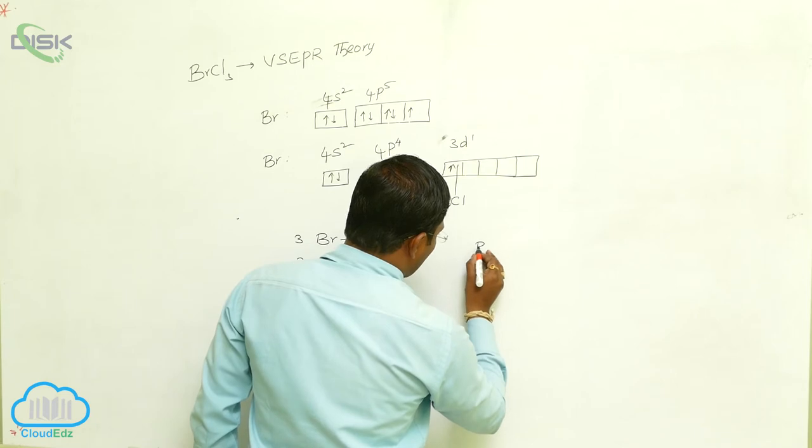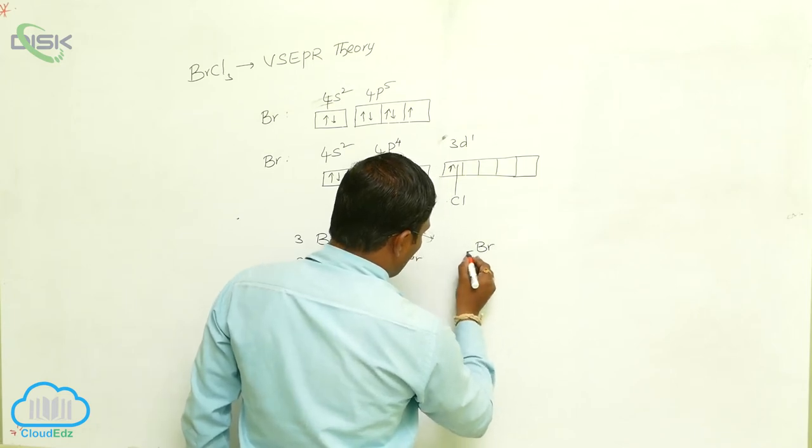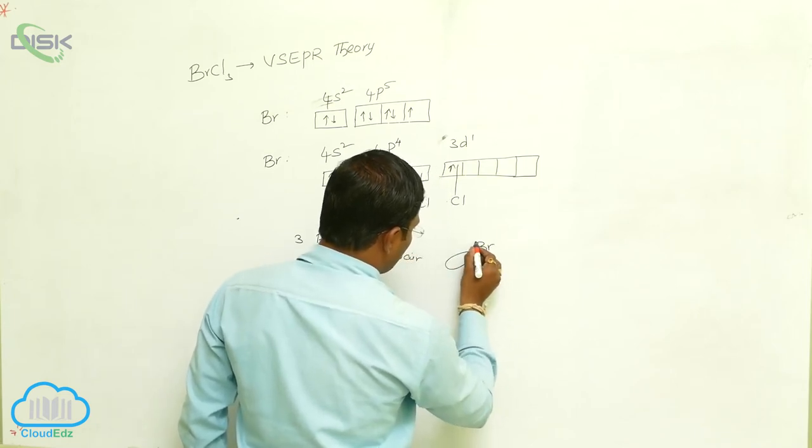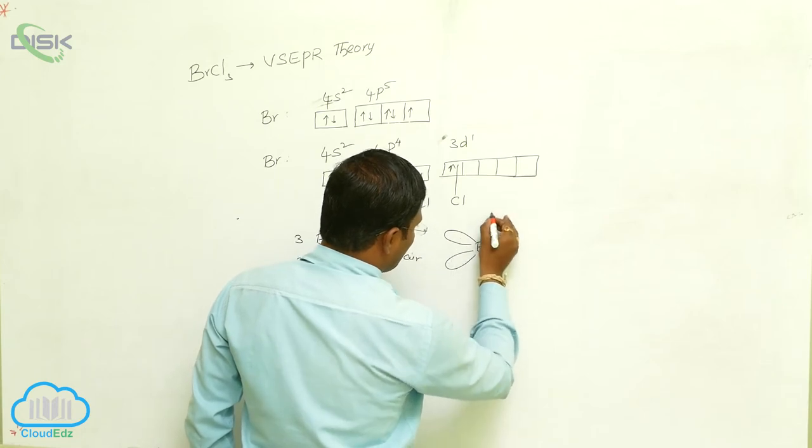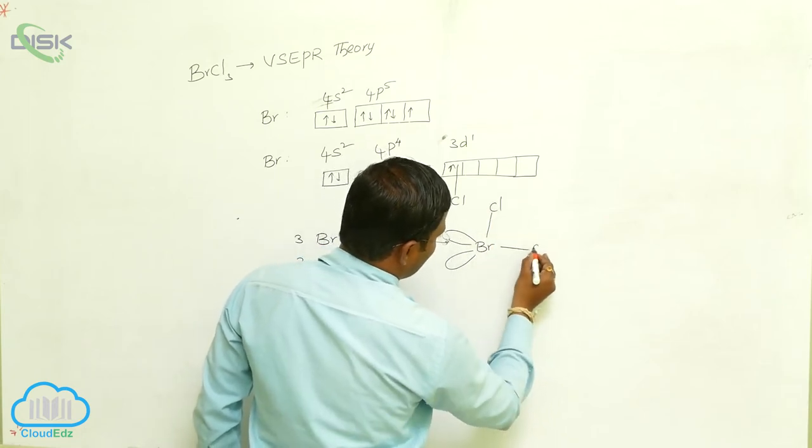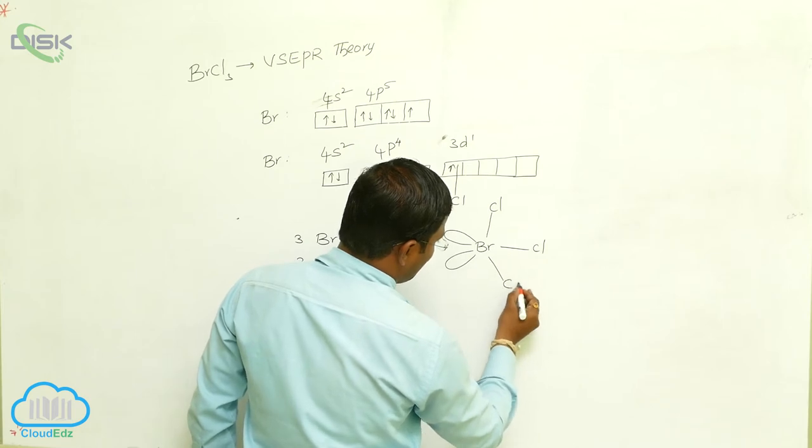Hence, the resulting structure consists of bromine bonded to three chlorine atoms.